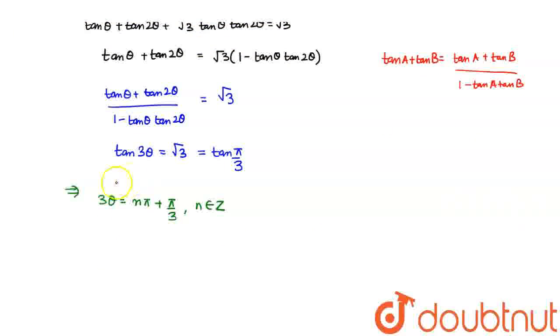If transposing 3 onto the RHS, I get theta is equal to n pi by 3 plus pi by 9 for all values of n belonging to integer z. I hope you understood the explanation. Thank you.